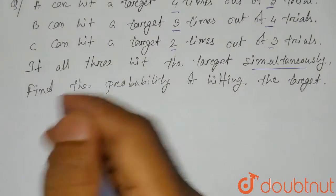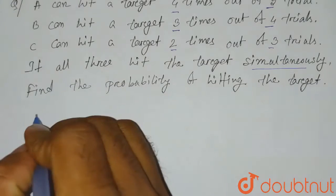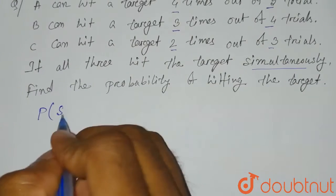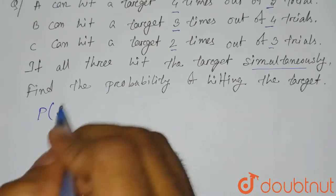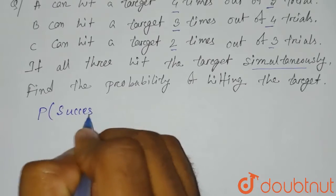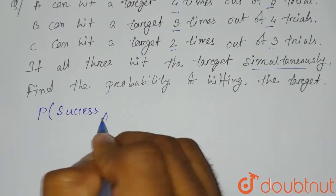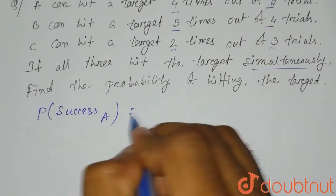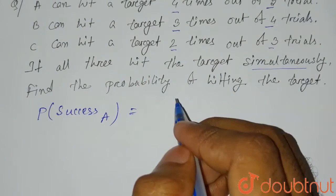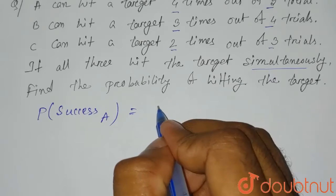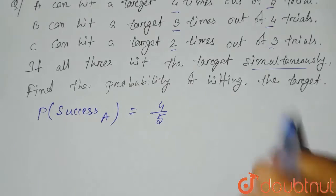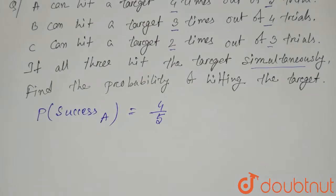So it is given that the probability of success of A — that means A can hit the target — will be equal to 4 by 5, since A hits 4 times out of 5. That is, favorable cases divided by total cases.